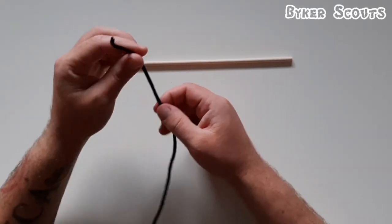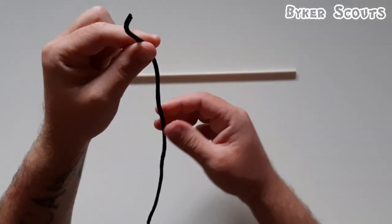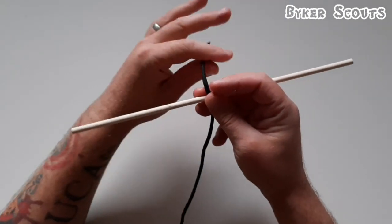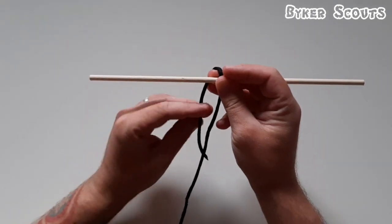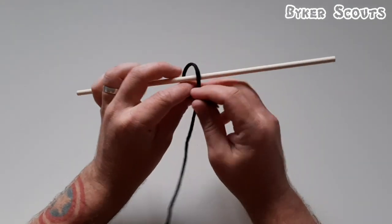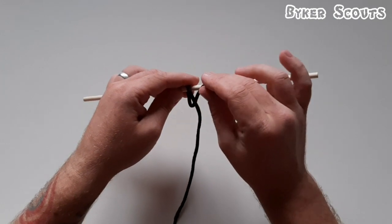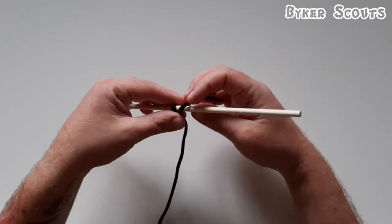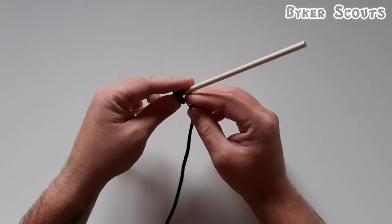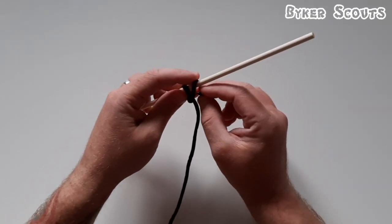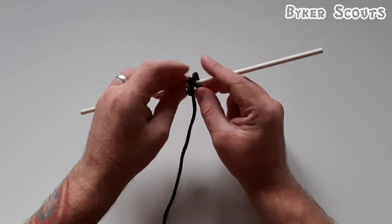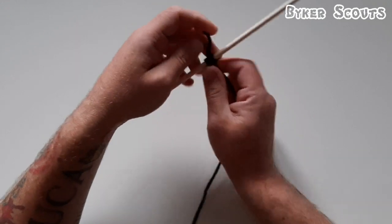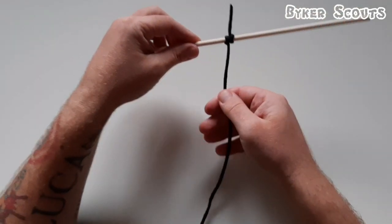In order to do the clove hitch, you're working one end of the string or paracord, bringing it over the dowel, around and back up. You'll be crossing over, coming round back up and creating a little hoop. Pop the string through there and pull tight, and there you have it - the clove hitch.